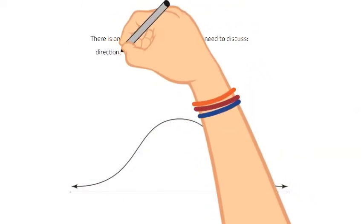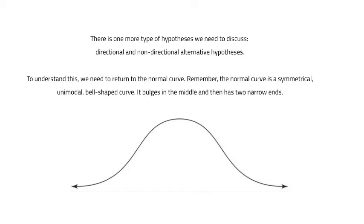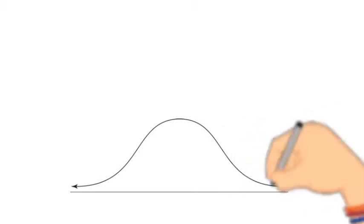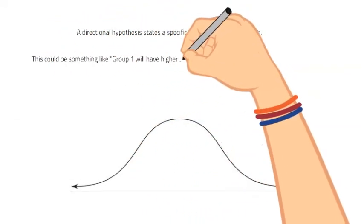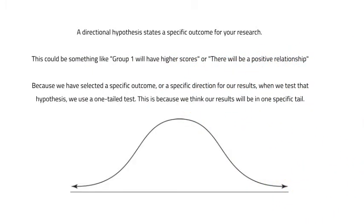There is one more type of hypothesis we need to discuss: directional and non-directional hypotheses. To understand these, we need to return to the normal curve — a symmetrical, unimodal, bell-shaped curve that bulges in the middle and has two narrow ends called tails. A directional hypothesis states a specific direction or outcome for your research, such as group one will have higher scores than group two, or there will be a positive relationship between these variables. Because we select a specific outcome, when we test that hypothesis we use a one-tailed test, since we think our results will be in one specific tail of the normal curve.